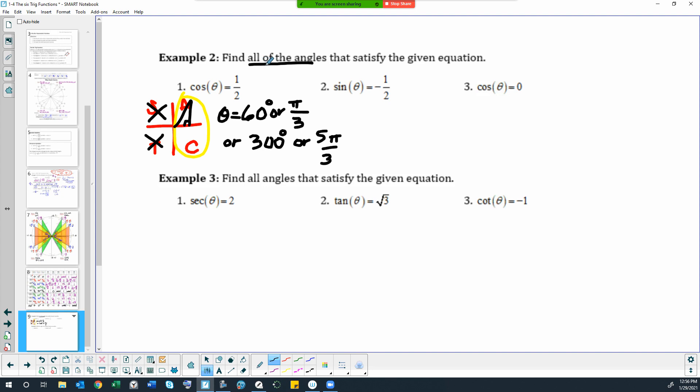But if we're supposed to be finding all of the angles, then that is where we start to use k, which allows us to account for all coterminal angles from negative infinity to positive infinity. So to find coterminal angles, we're either adding or subtracting 360 or we're adding or subtracting two pi.